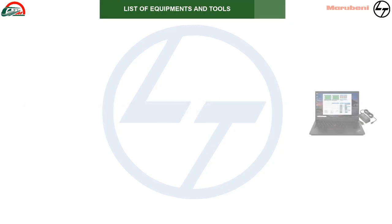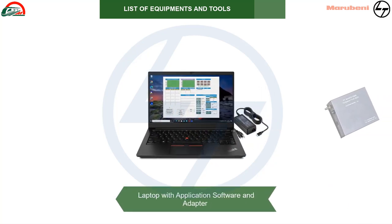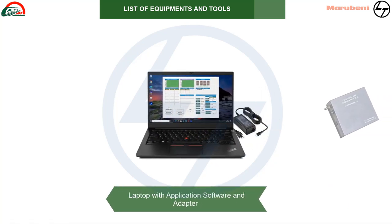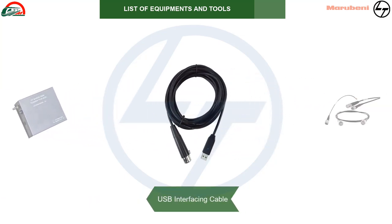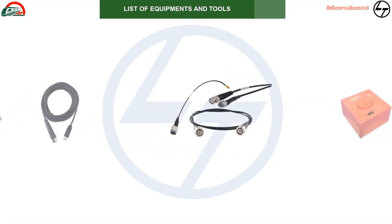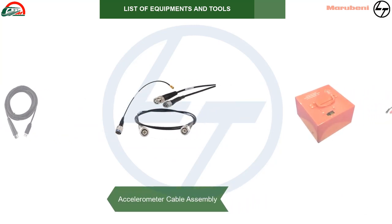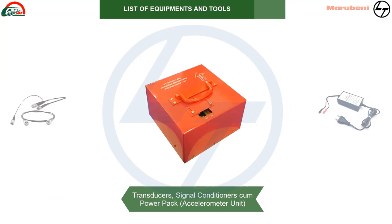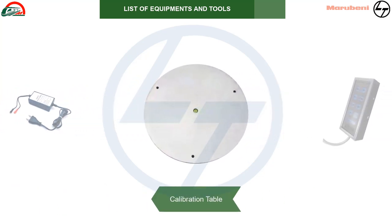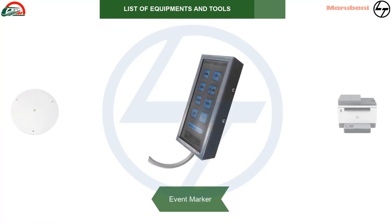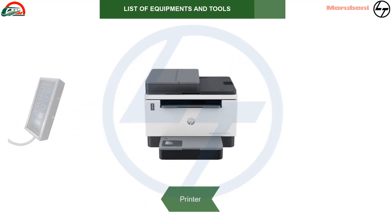List of equipment and tools: laptop with application software and adapter; termination box along with NI USB DAQ module; USB interfacing cable; accelerometer cable assembly; transducers; signal conditioners; cum power pack; accelerometer unit; SMPS battery charger; MiPS with connector assembly; calibration table; event marker; printer.